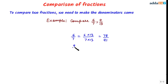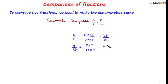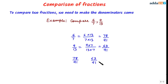Similarly, for 9/13, we make the denominator 91 by multiplying 13 by 7. Multiplying the numerator 9 by 7 gives us 63, so 9/13 becomes 63/91. Now both fractions have the same denominator: 78/91 and 63/91.